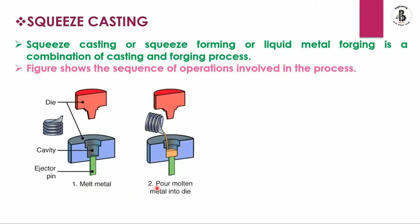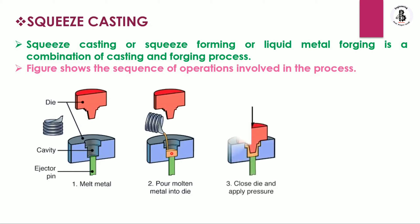Second step: pouring the molten form of the metal into the die. You can see the molten metal being poured. Third step: close the die and apply the pressure — similar to a forging arrangement — applying force with the die towards the molten metal which is filled into the mold cavity.